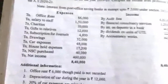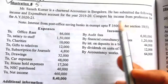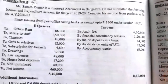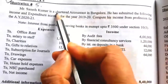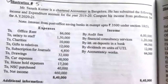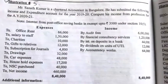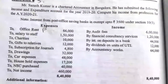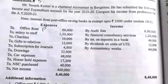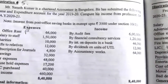With the help of the income and expenditure account, we have to find out the taxable income of Mr. Sanat Kumar from his profession for the assessment year 2020-21. The details are about a chartered accountant in Bangalore, so this is about profession. To find the taxable professional income, we first need to identify the professional related incomes — that is, the professional receipts.